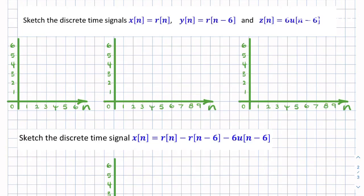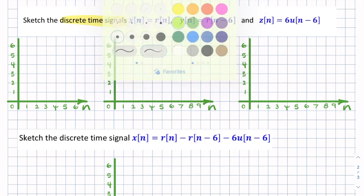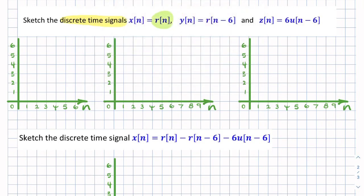In this question, we're given three discrete time signals: a unit ramp, a shifted ramp, and a shifted step. So three functions x, y, and z, and we're being asked to plot them.